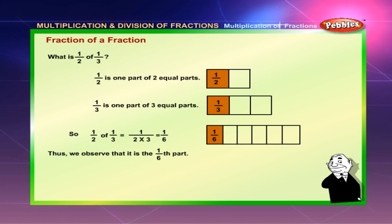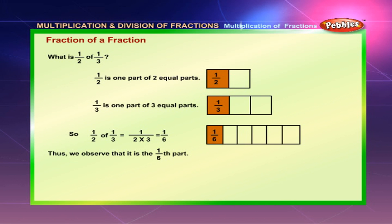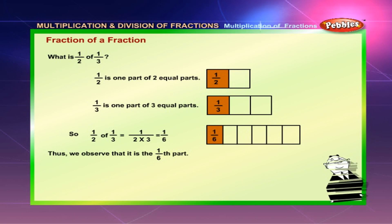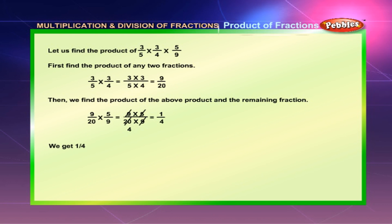Fraction of a fraction: What is 1 by 2 of 1 by 3? 1 by 2 of 1 by 3 is equal to 1 by 2 into 3, which is equal to 1 by 6. Thus, we observe that it is the 1 sixth part.